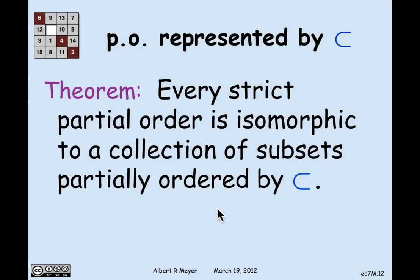And the theorem that we illustrated with that example of proper divides and proper subset is that, in fact, every strict partial order is isomorphic to some collection of subsets partially ordered by less than. So this is a kind of a representation theorem. If you want to know what kinds of things are partial orders, the answer is that a strict partial order is something that looks like a bunch of sets under containment. It's isomorphic to a bunch of sets under containment.